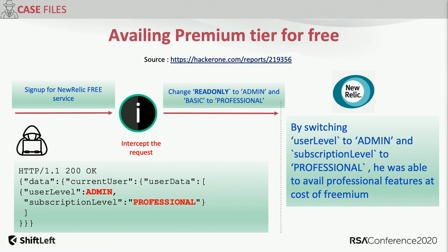This played out with New Relic. Every website that provides a service has pricing tiers — free escalating to premium, platinum, and so on. Unfortunately, they were reflecting parameters representing the tier. This was low-hanging fruit: on feedback the attacker received information saying 'user level: admin, subscription level: professional.' If you enumerate subscription level there's a finite set of words — fuzz those and you figure out ways to escalate. This bug bounty was announced because the individual just kept moving up tiers and availing services for free.